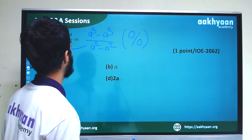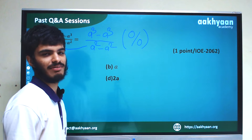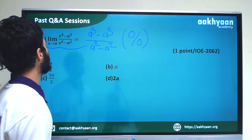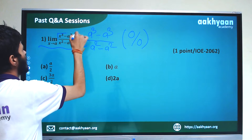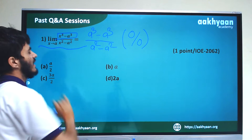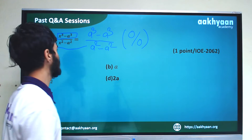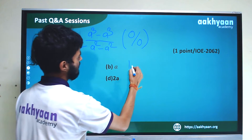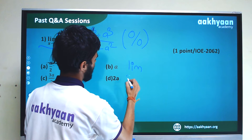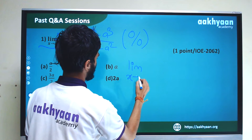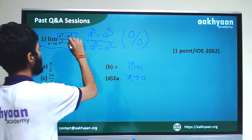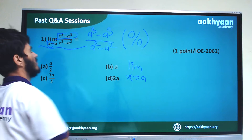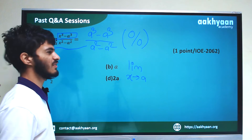Since 0 by 0 form is obtained, we apply L'Hôpital's rule. The rule states: limit x tends to a of f(x) by g(x) equals limit x tends to a of f'(x) by g'(x). So we take the derivative of the numerator and denominator.